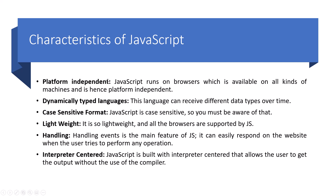The first characteristic is platform independence. JavaScript is a platform independent language — it runs on the browser, which is available on all kinds of machines, and is hence platform independent. The next is dynamically typed language — this language can receive different data types over time, so it is called a dynamically typed language.